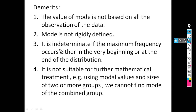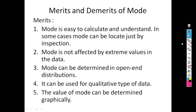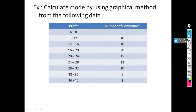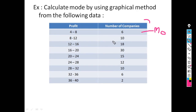Another demerit is that mode is indeterminate if the maximum frequency occurs either at the very beginning or at the end of the distribution. For example, if this is our modal class at the beginning, we cannot define the pre-modal class — that is, the class just before the modal class — because no such class exists.